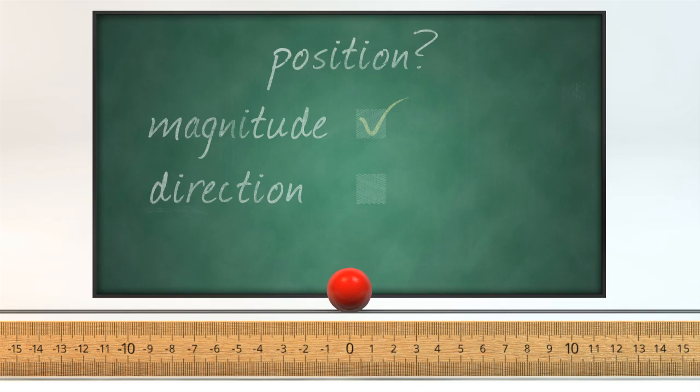We have to think carefully. We know that position can be a negative number too, and we already saw that negative means left in one dimension. So then position has both a magnitude and a direction. So it has to be a vector.